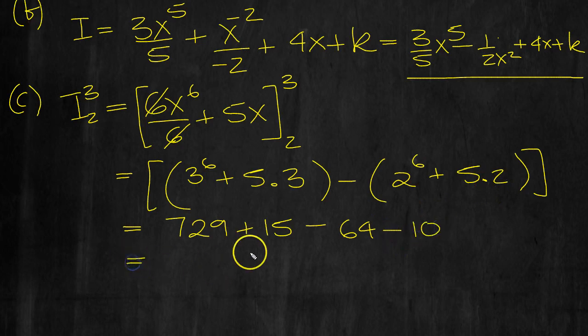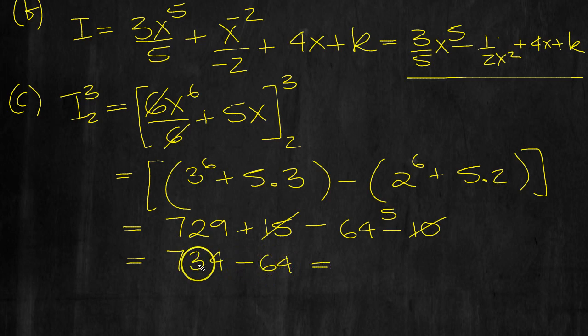So that's what we've got. So what is it then? Well, 15 take 10 is 5. 729 plus 5 is 734, minus 64 is equal to, the 4s will cancel.